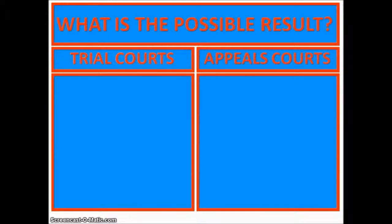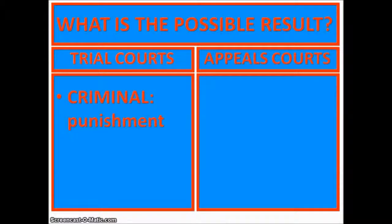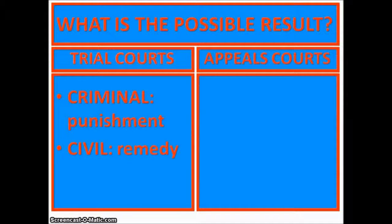The possible results differ because of this. In a trial court, if it's a criminal case, the possible result is punishment. In a civil case, it's a remedy — whether that be money or some other remedy.